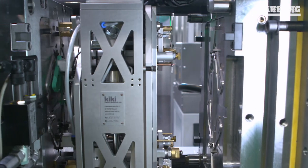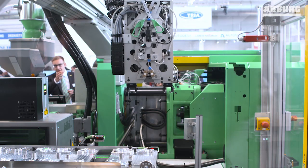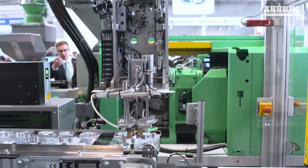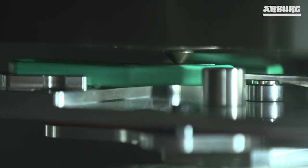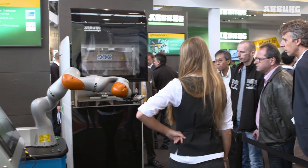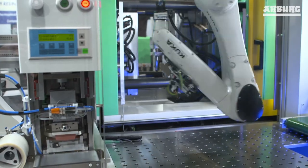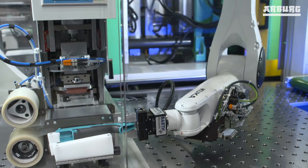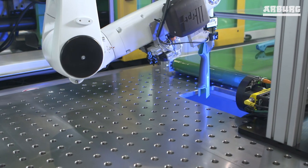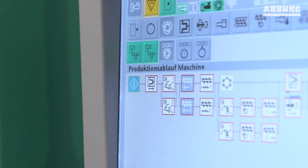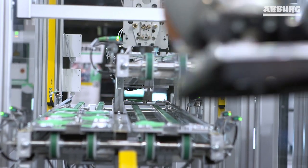The starting point for Industry 4.0 and the digital factory is a flexible production technology that can greatly simplify and accelerate setup processes and also combine different production methods using automation components. However, in order for a flexible production technology to deliver real flexibility, it must be possible to quickly connect individual machines and automation components in a production cell.